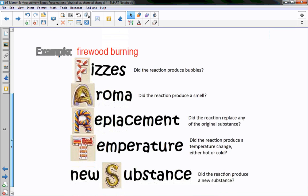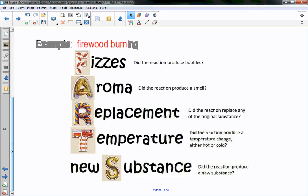Here is a really cute little way for you guys to help remember this. An example of firewood. These are all chemical changes. So if it fizzes, did the reaction produce bubbles? Was there aroma? Could I smell it? Was there a replacement? Did the reaction replace any of the original substances? Temperature. Did the reaction produce a temperature change? Did it get hot or cold? New substance. Did the reaction produce a new substance?